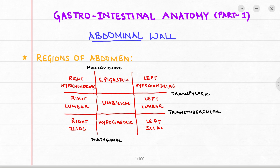The abdomen is divided into 9 equal quadrants by 2 horizontal and 2 vertical lines. The horizontal ones are the transpyloric and the transtubercular plane, and in the vertical region we have the mid-clavicular and the mid-inguinal plane. This gives rise to 9 equal quadrants.